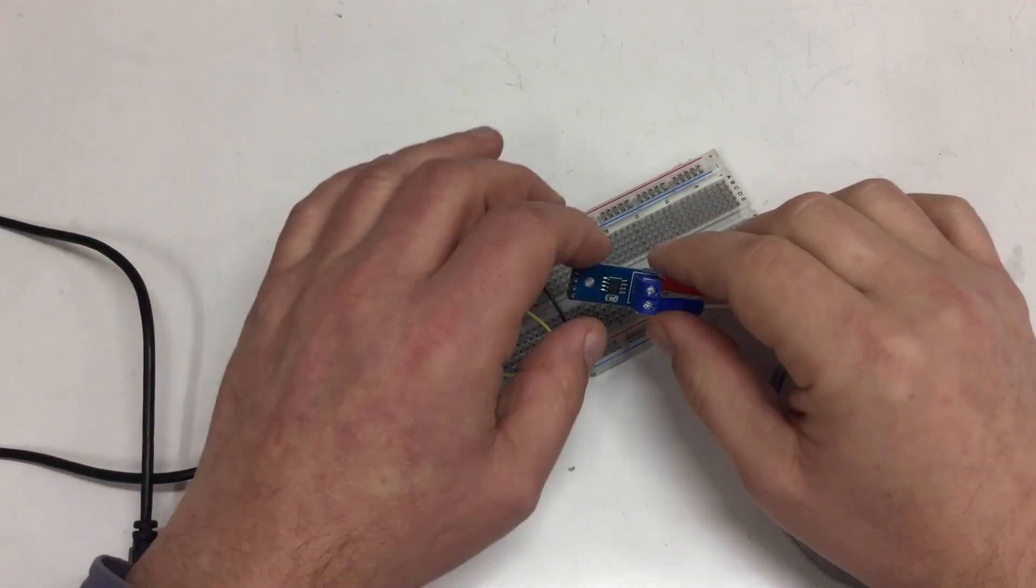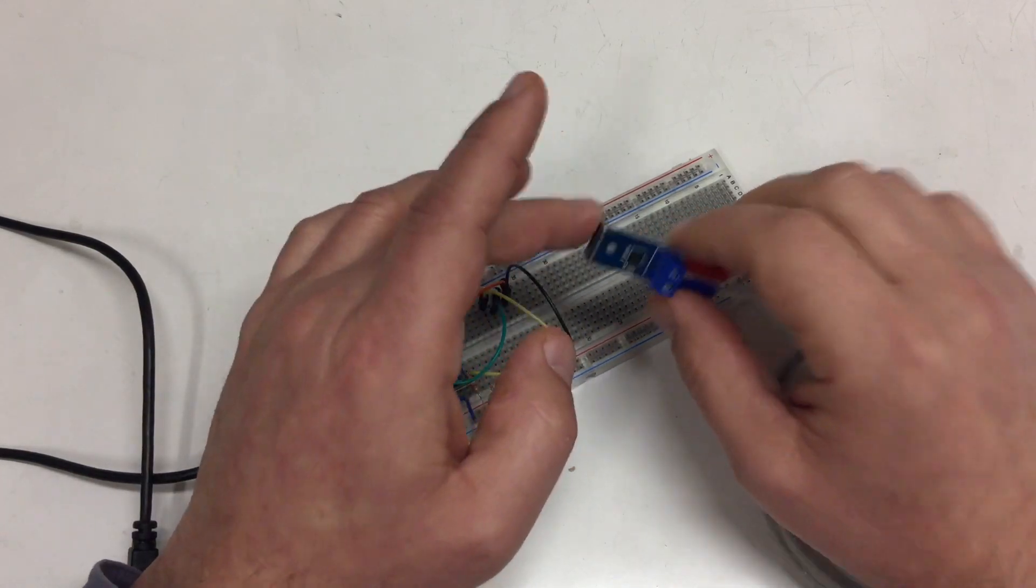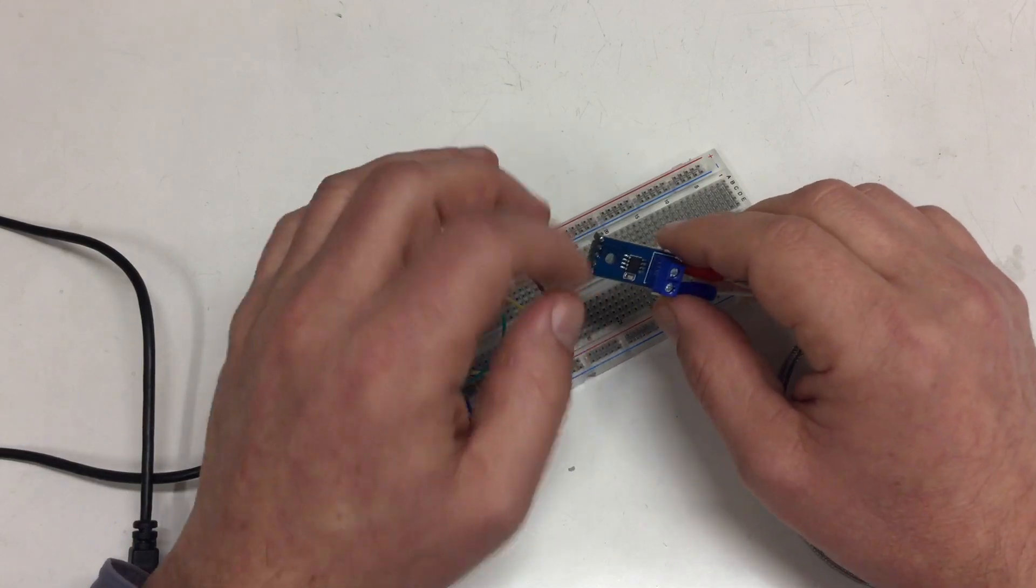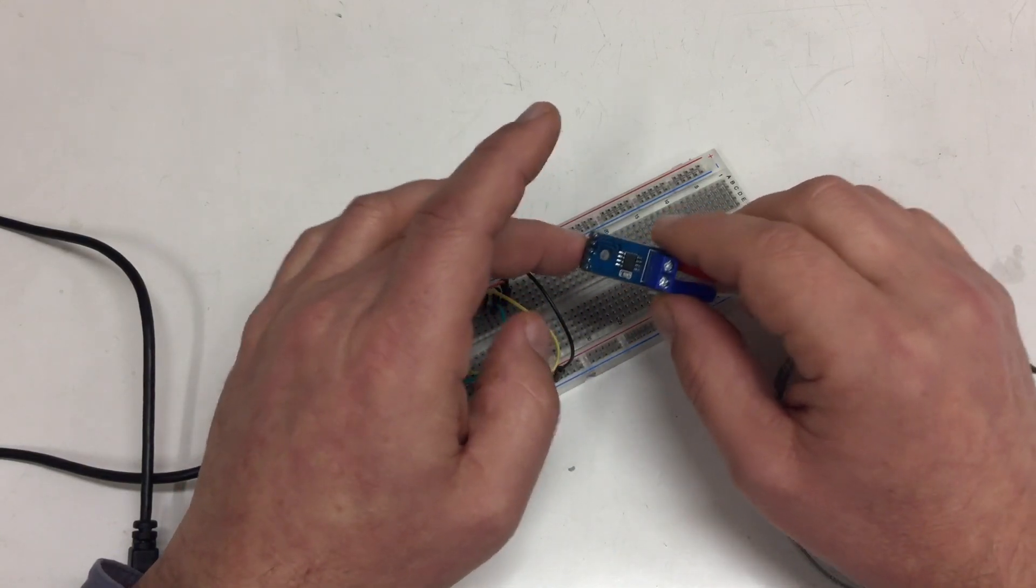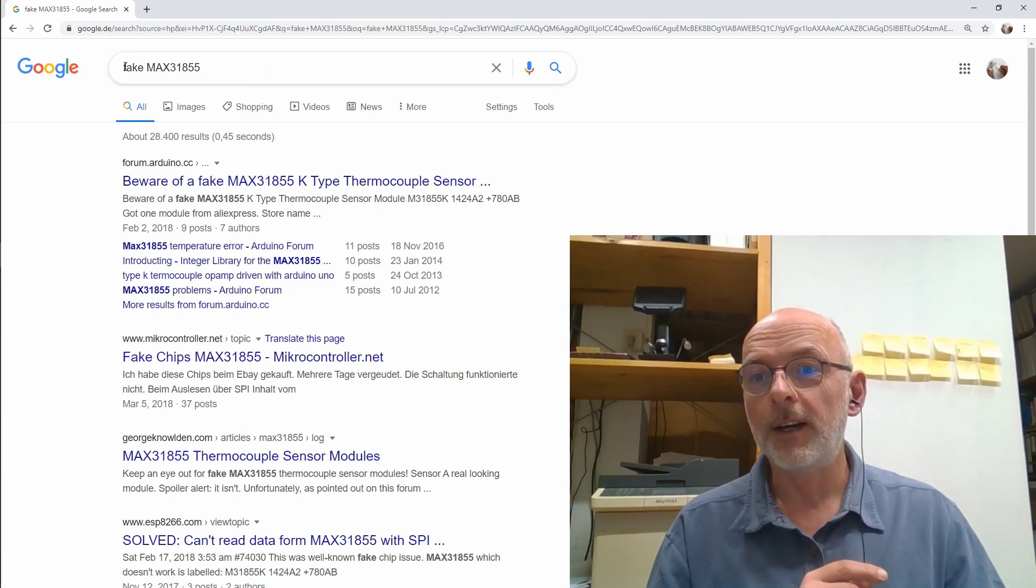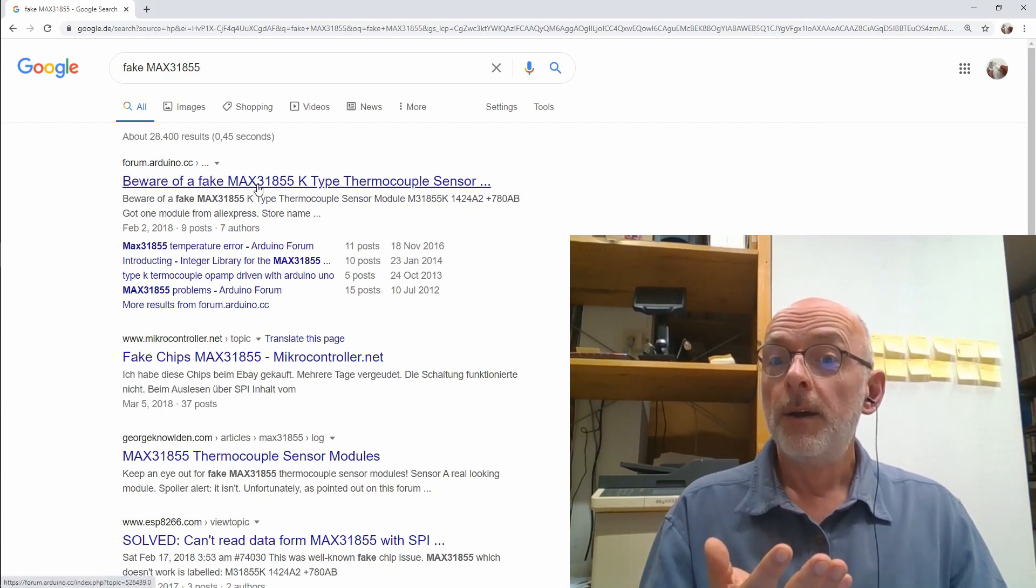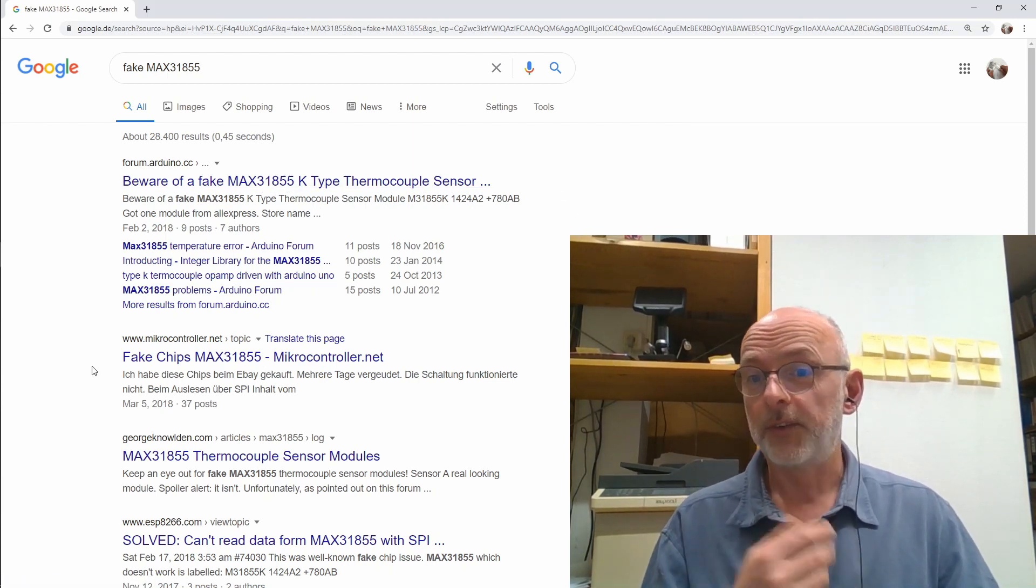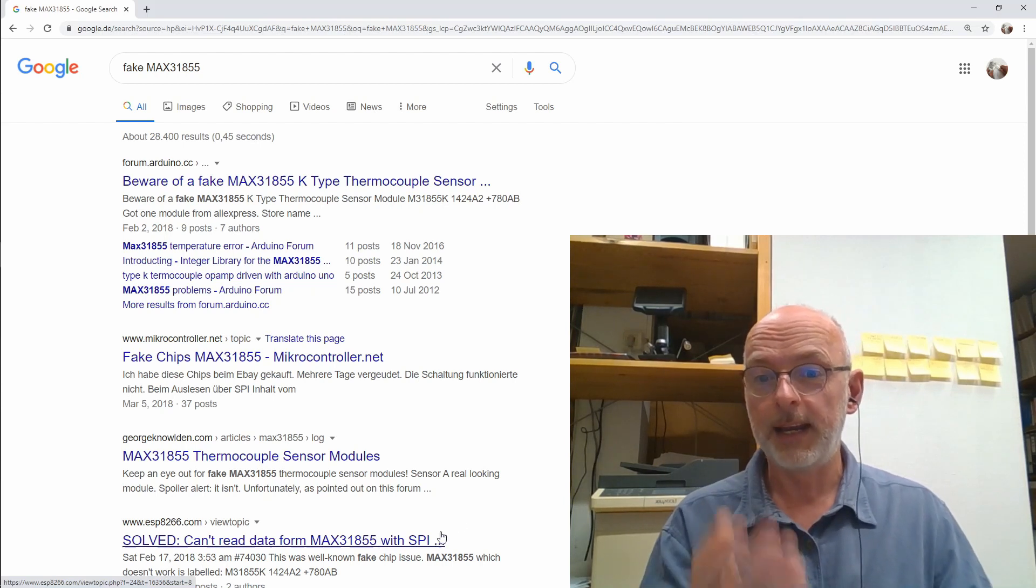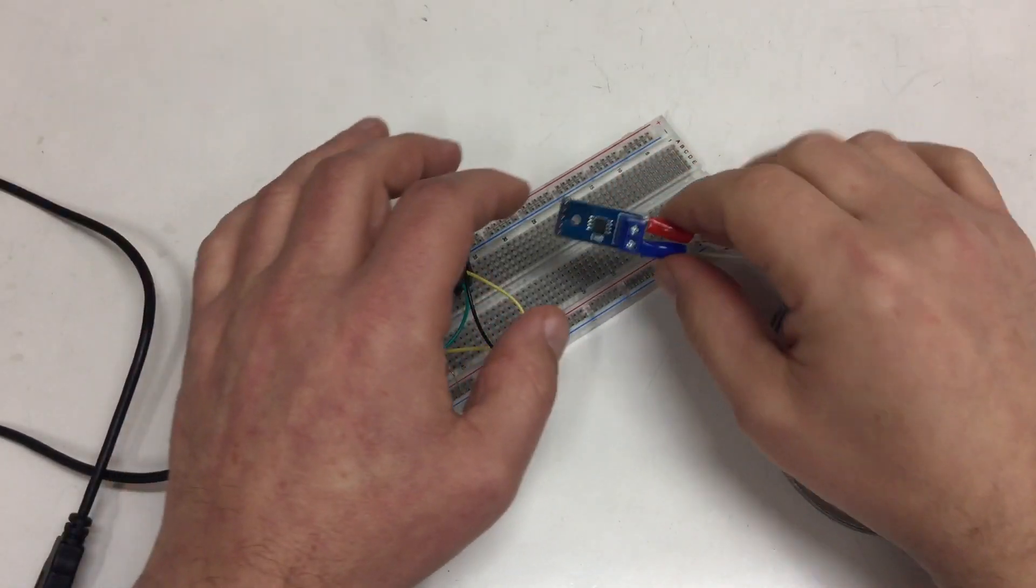Now, I'm not saying that each and every Chinese Max 31855K breakout board has a fake chip on it, okay? But they are out there, and it's a known problem. And I'm also not only miffed at whoever makes these things, I'm also a little bit miffed at myself because I could have known. If you Google for fake Max 31855, you get a lot of hits. Beware of fake Max 31855 K-type thermocouple sensors. Fake chips Max 31855. Software can't read data from Max 31855 with SPI—exactly what I experienced. This was a well-known fake chip issue.